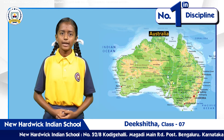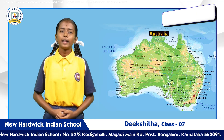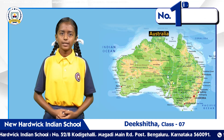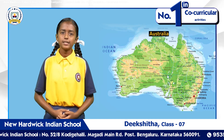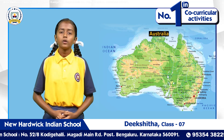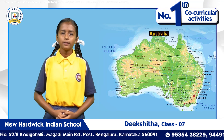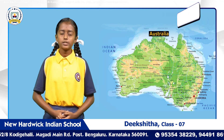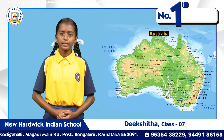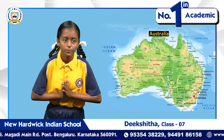Out of the total land surface in Australia, 94% is less than 600 meters above sea level, comprising a flat lowland. Therefore, it is known as the flattest continent. Thank you.